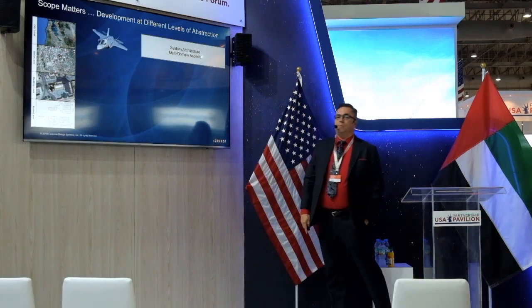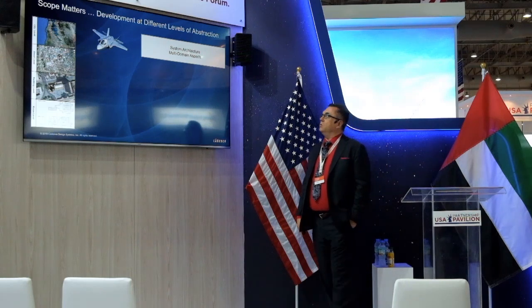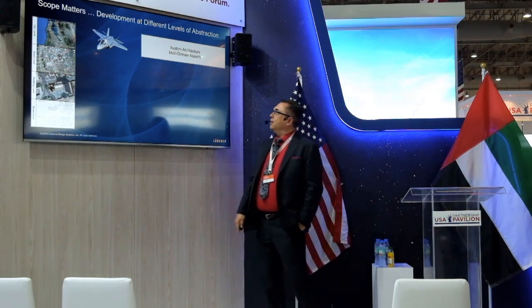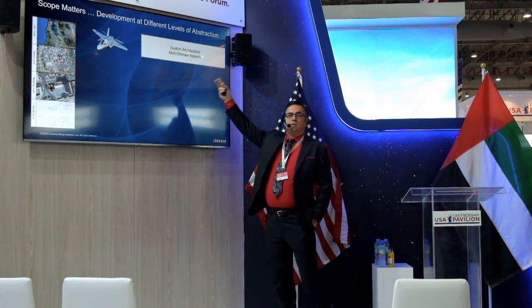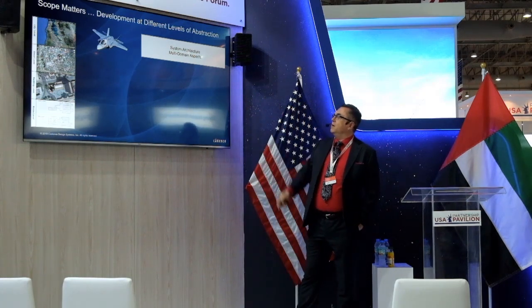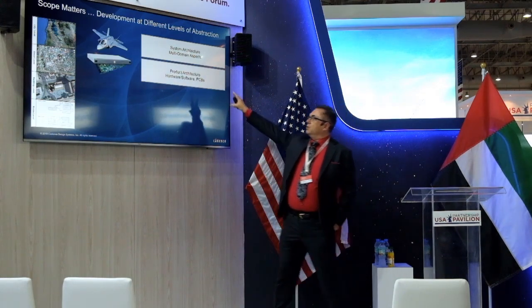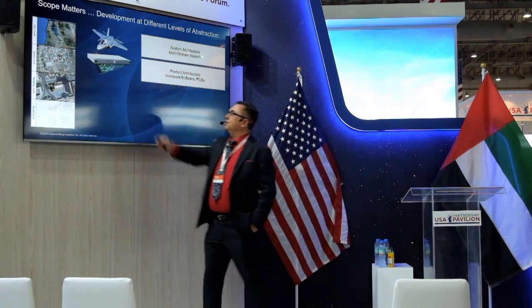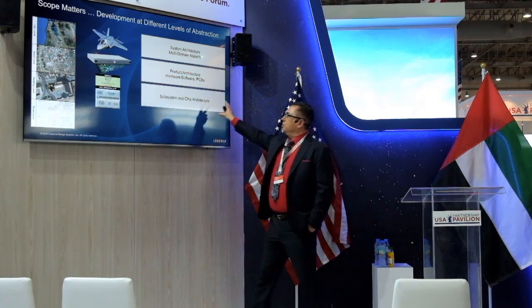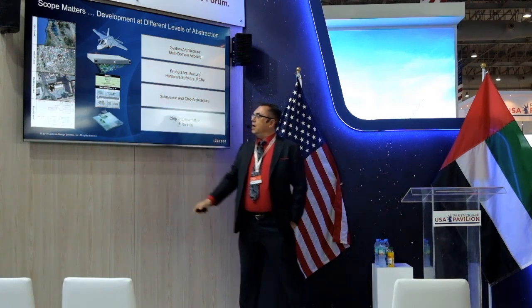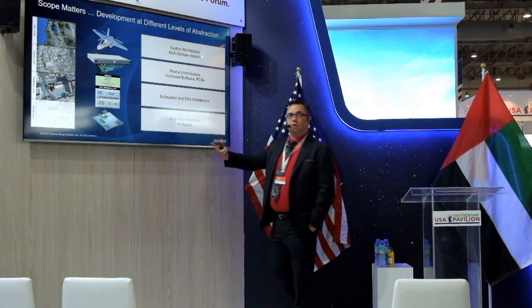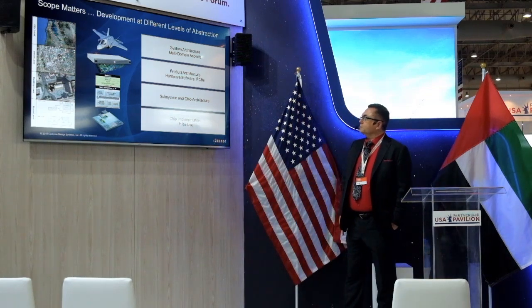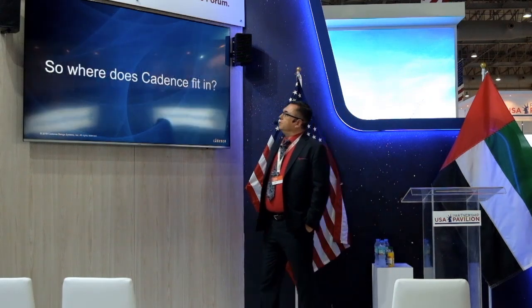The same thing happens with a system design top-down, like for airplanes and cars, where you first look into the system architecture and the multi-domain aspects. You look into the product architecture — the different pieces you have in the plane — and then into the subsystem and chip architecture. Underneath, you have building blocks for the chips, mostly hardware and software. So you're reusing existing blocks in your system design.